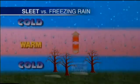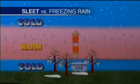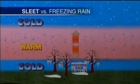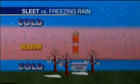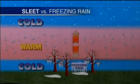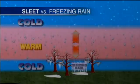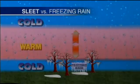Freezing rain is when that warm layer of air becomes sufficiently deep so that when the snow melts into rain, the rain doesn't have enough time to form into those little sleet pellets. Instead, it freezes on surfaces when it makes contact at the ground.